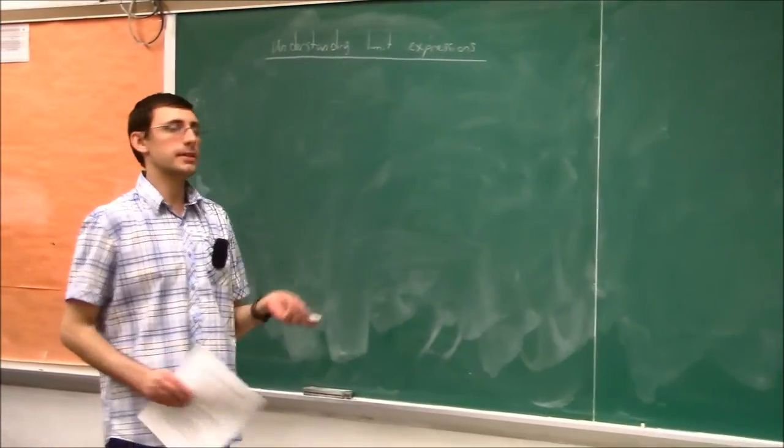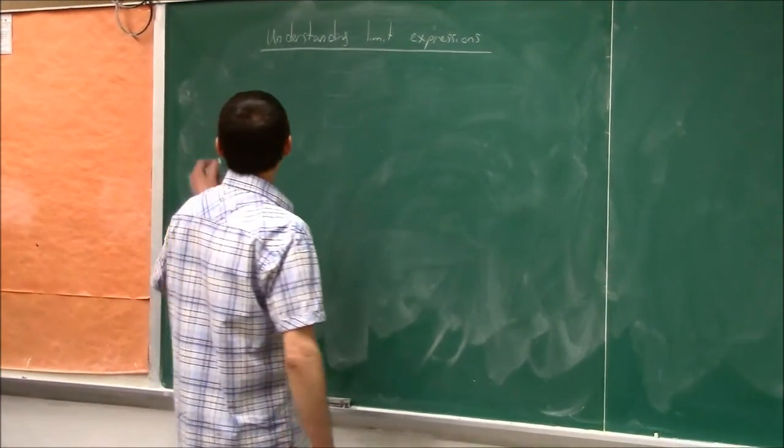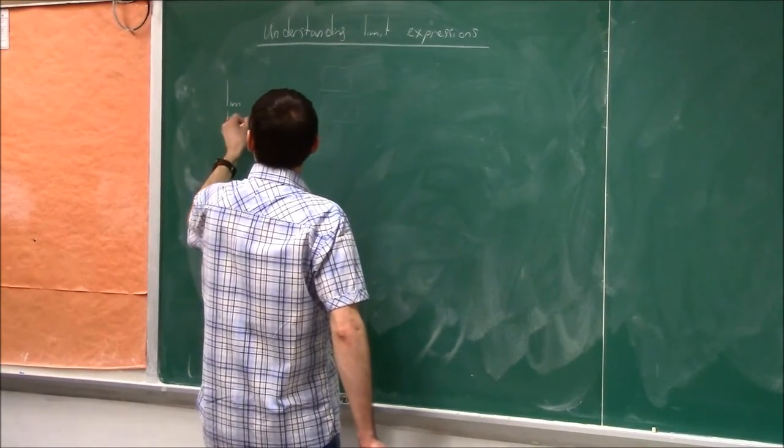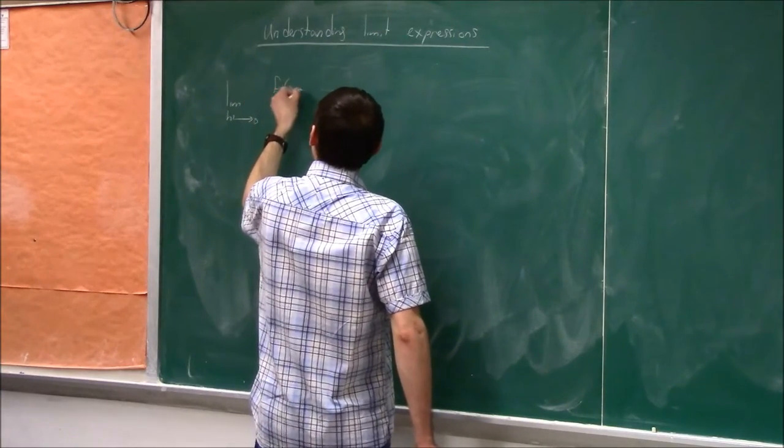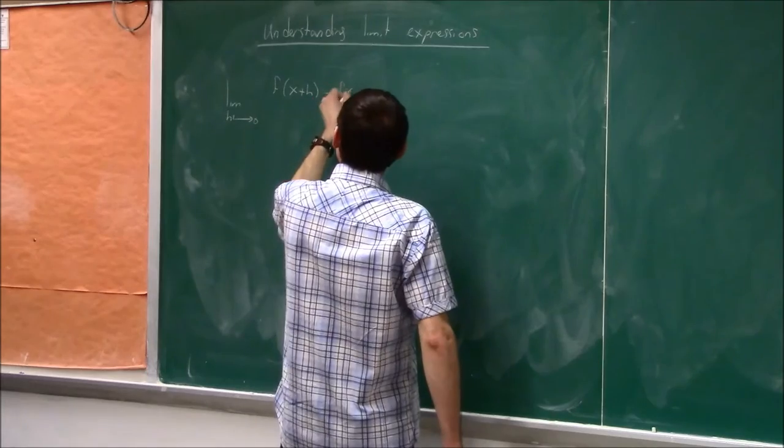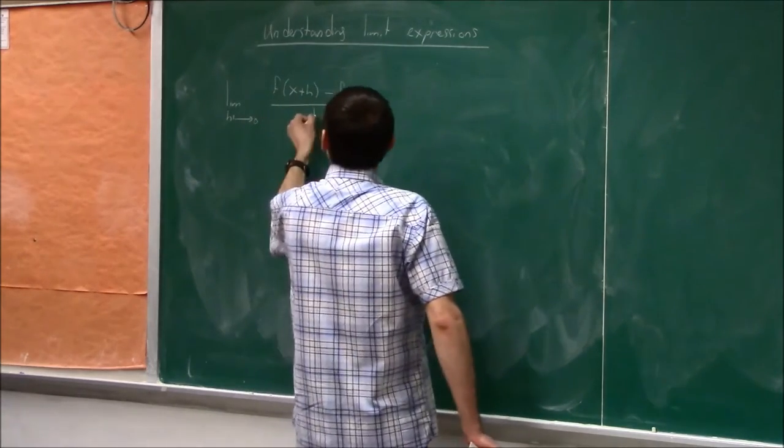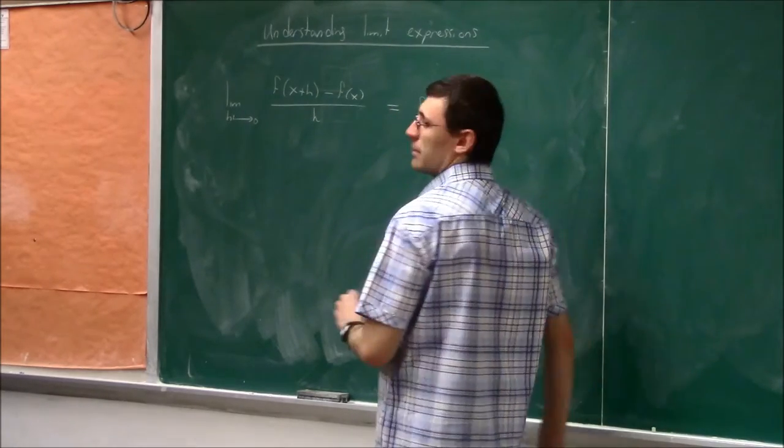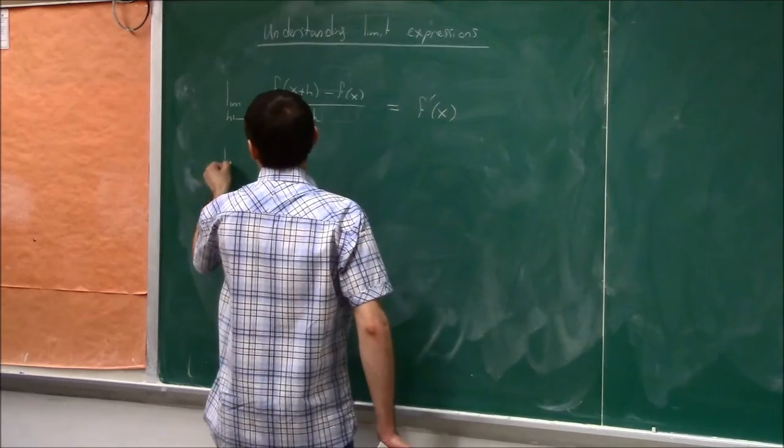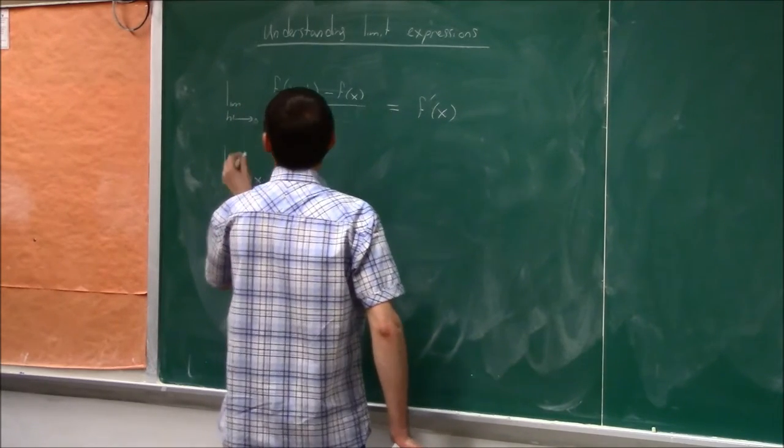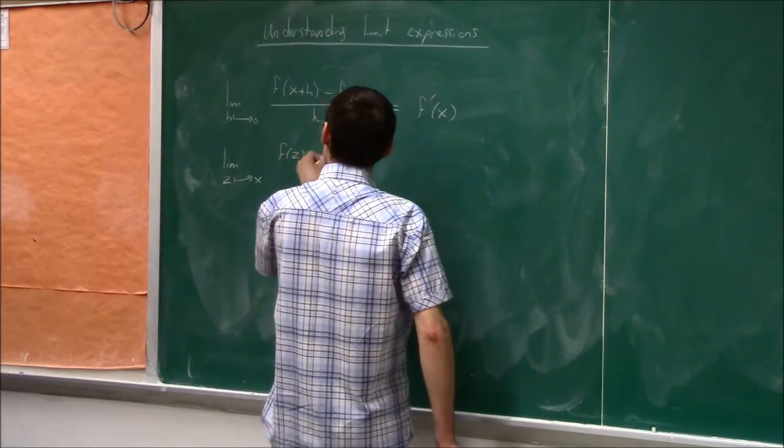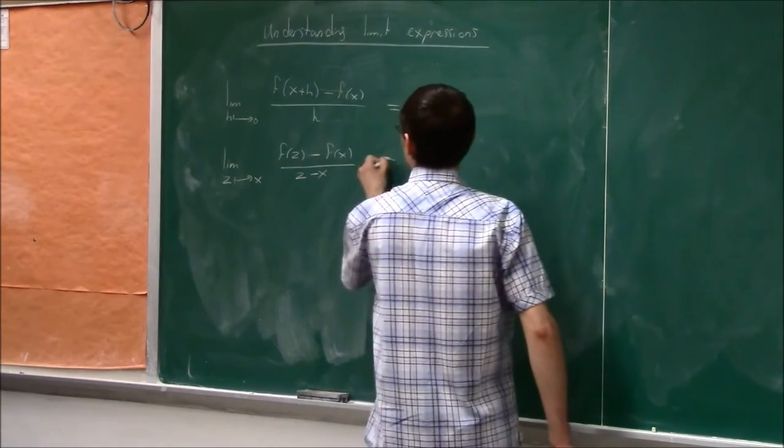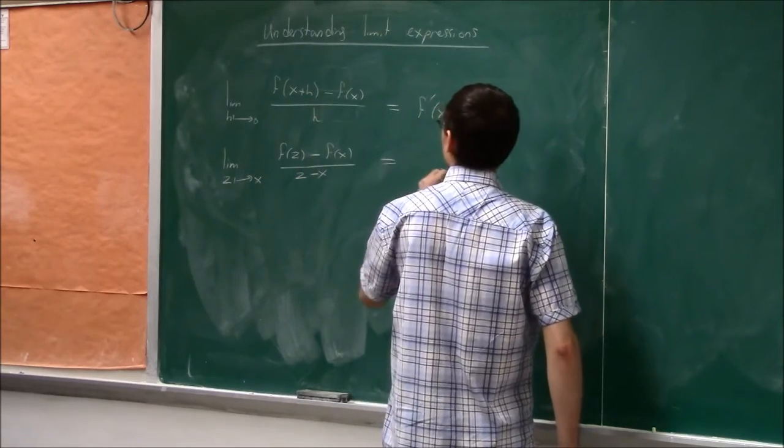Now let's talk about understanding limit expressions. What I mean by this is, if you see an expression like limit as h goes to 0 of f(x+h) - f(x) over h, you right away think of the derivative. And if you were to see the same limit but written slightly differently, you should understand that both things have the same exact meaning.